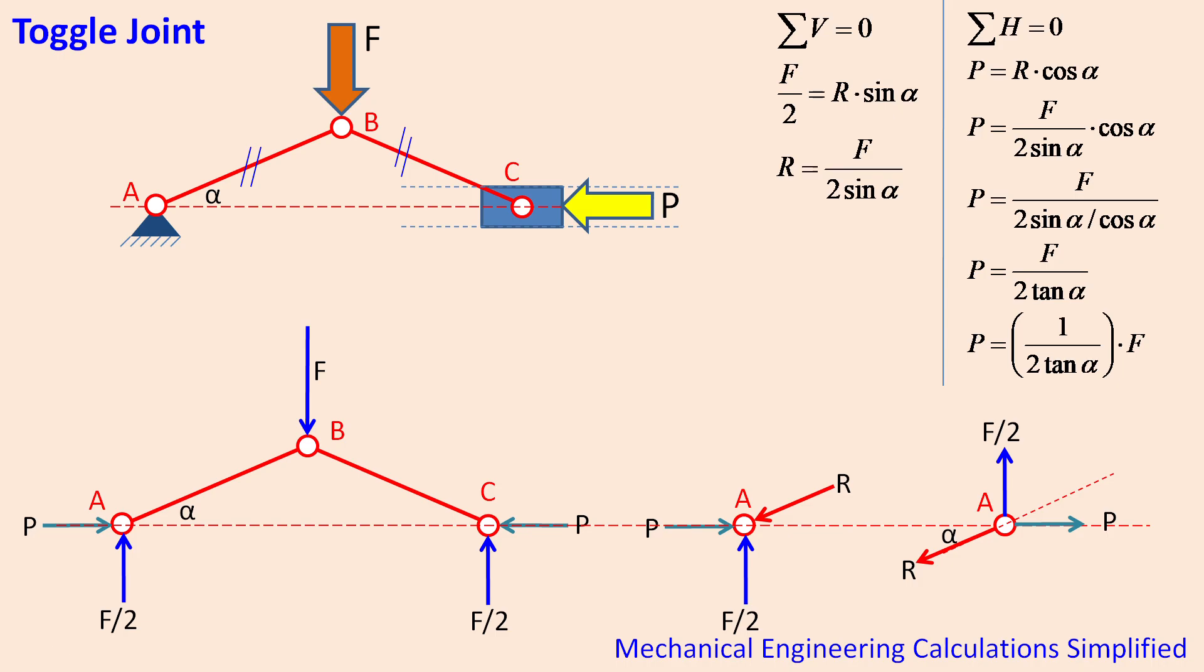So if we apply a force F it will be amplified by a magnitude of 1 divided by 2 tan alpha and the output force will be generated P.